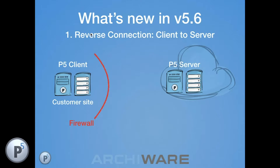This feature allows you to configure the client with a permanent outbound connection it keeps open to the P5 server — the firewall allows that as a regular outbound TCP/IP connection. When the server wants to do an hourly replication, it reuses the connection already opened by the client rather than making a new one, overcoming networking barriers and making cloud-based P5 deployments much easier.